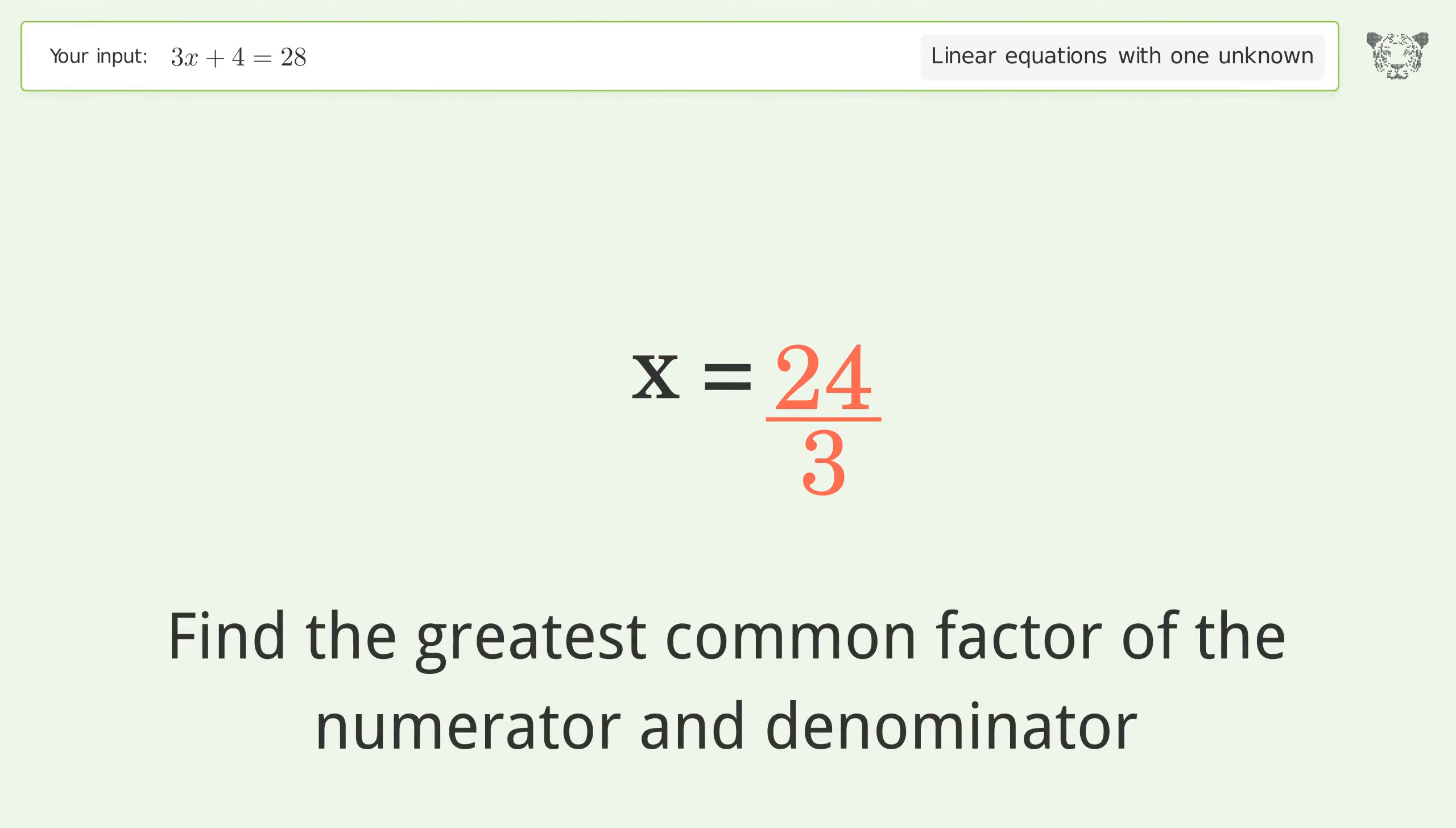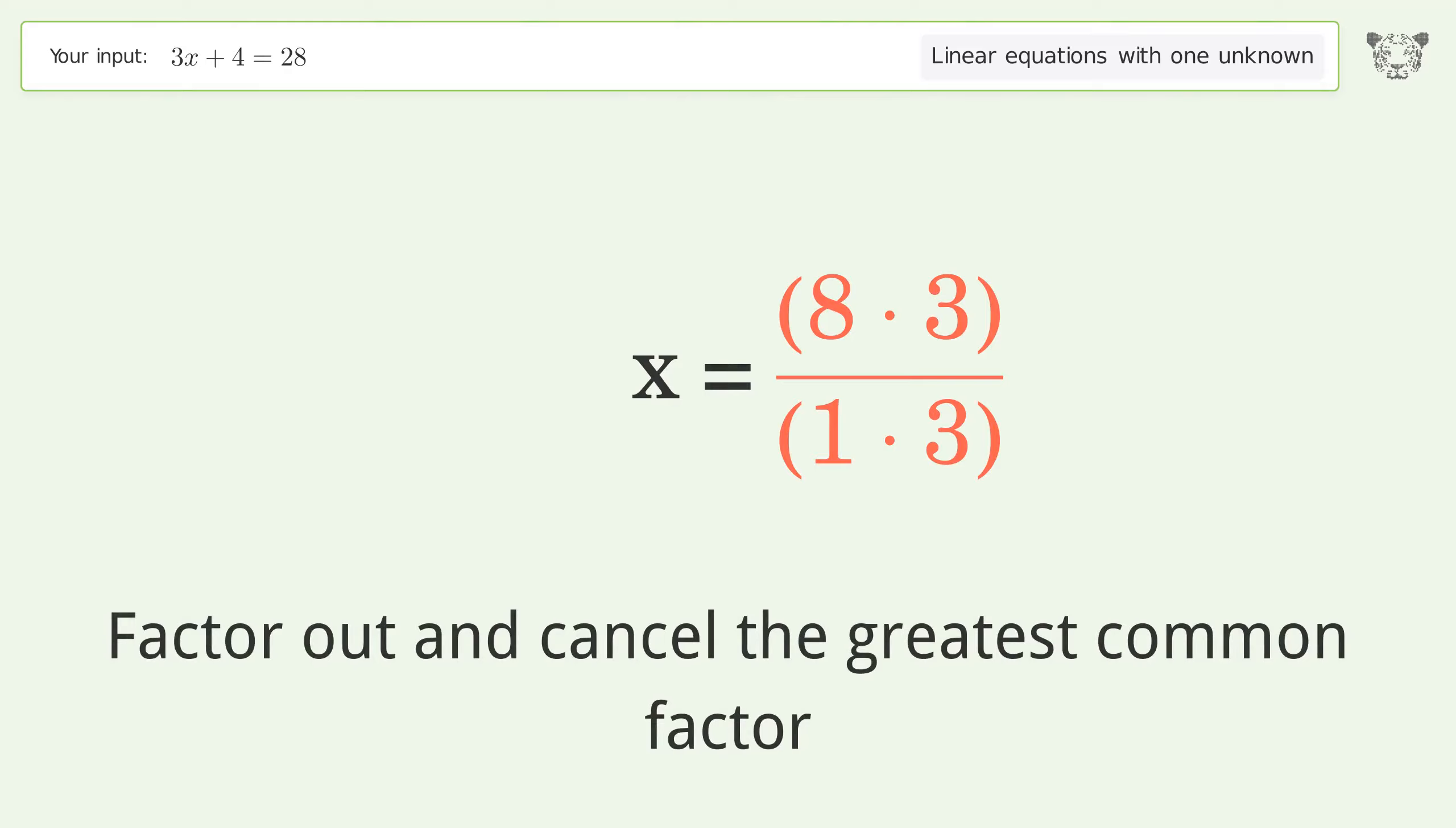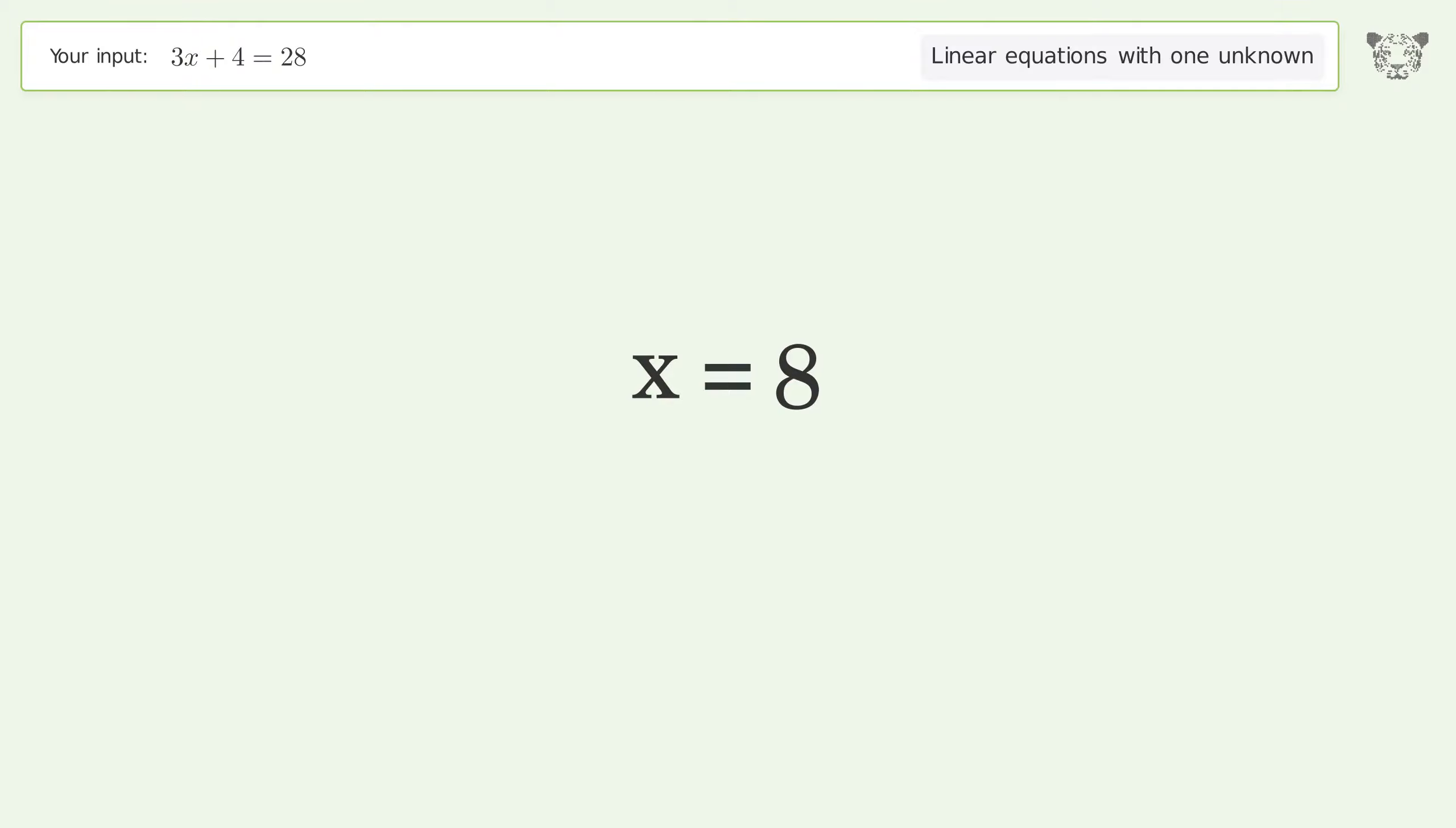Find the greatest common factor of the numerator and denominator. Factor out and cancel the greatest common factor. And so the final result is x equals 8.